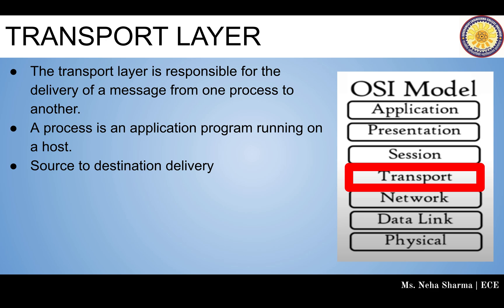The transport layer deals with source-to-destination delivery. Source-to-destination delivery means a computer runs several programs at the same time. So it means not only from one computer to the next, but also from one specific process on one computer to a specific process on another. The transport layer header must therefore include a type of address called a service point address in the OSI model and a port number or port address in the Internet and TCP/IP protocol suite.